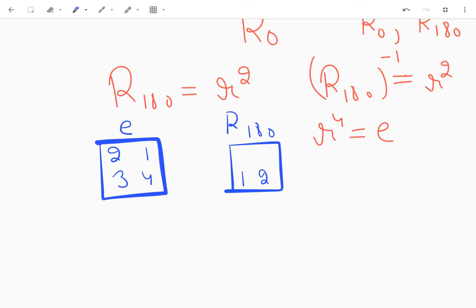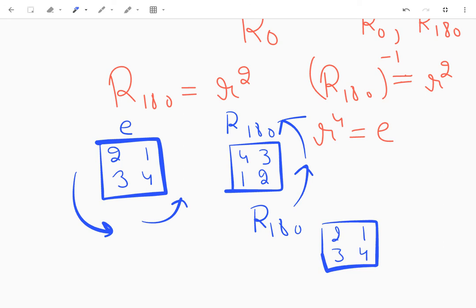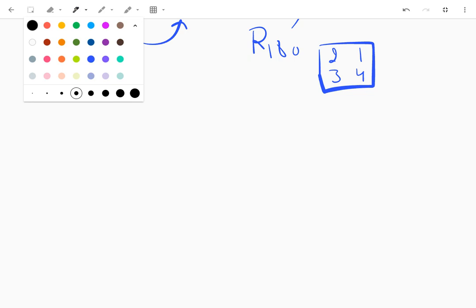Now how do I get back to e? Simple, I'll rotate it again twice. So I'll apply r_180 again on this and I will again get my identity element. So that is why r_180 is its own inverse.